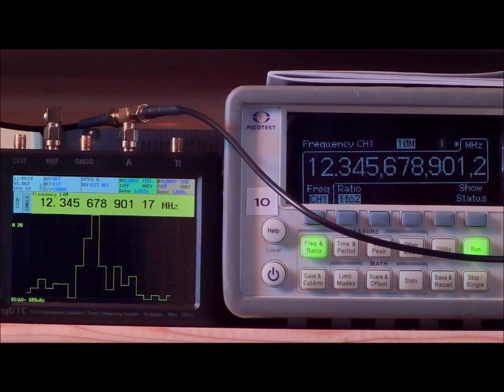In the TinyGTC I've changed the graph display to histogram, and the total width of the histogram is about 700 microhertz. You can see the distribution over the frequencies as they are coming in in the measurement.